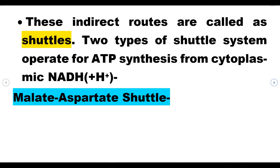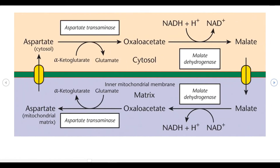The first one is the malate-aspartate system, और जो दूसरा है वो है glycerol phosphate shuttle system. Malate-aspartate system में क्या होता है - यह diagrammatically आपको बताया गया है। यह है cytosol यानी cytoplasm, और यह mitochondria है। Glycolysis का process cytoplasm में होता है, तो cytoplasmic NADH यहीं produce होती है।